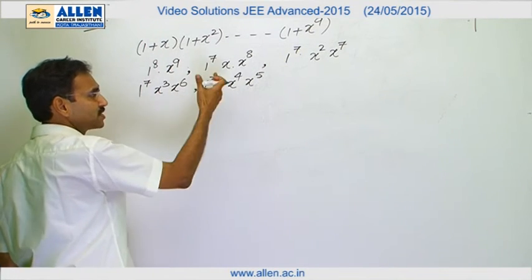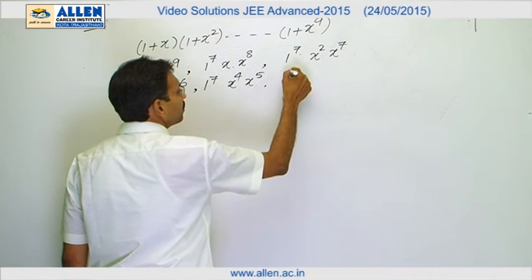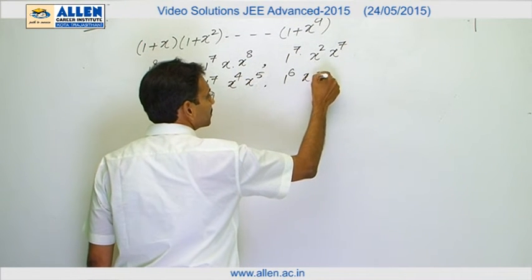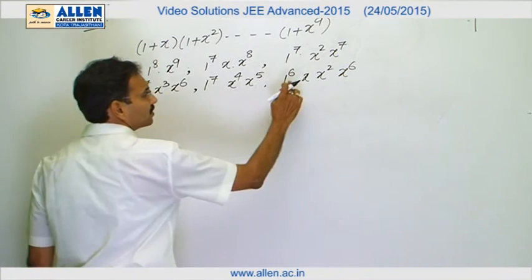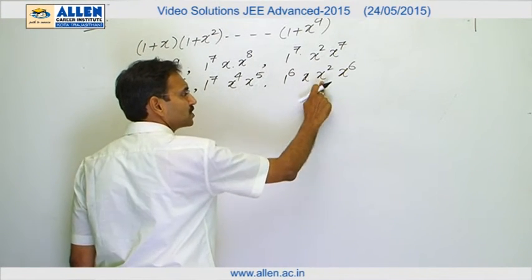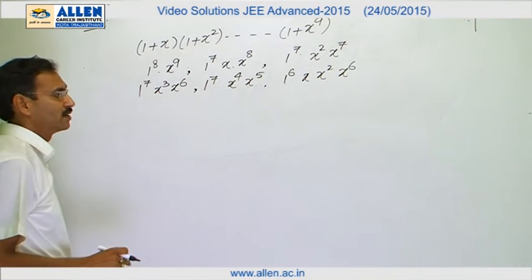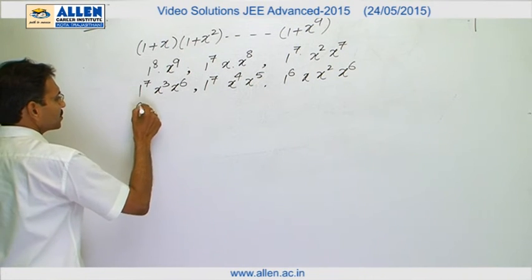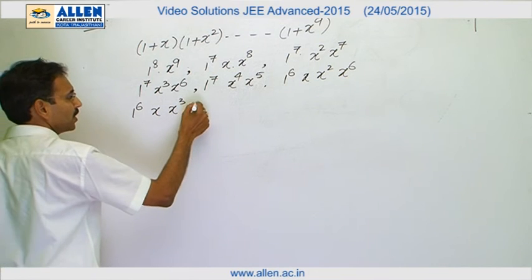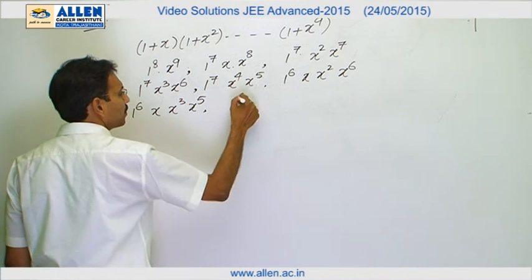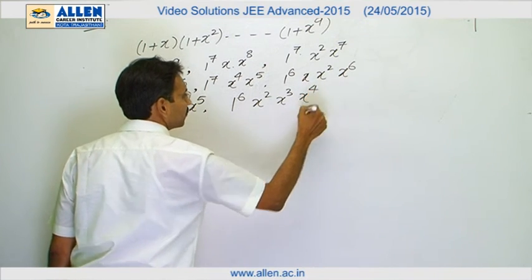These are 5 instances, means 5 is the coefficient but still there are few more like 1 power 6, then x, x square and x power 6. These are 3 factors, 1 plus x, 1 plus x square, 1 plus x power 6. Rest of the 6 factors are contributing 1. Now 1 power 6 x, x cube, this gives us x power 4 and x power 5. Then 1 power 6, x square, x cube and x raise to the power 4.